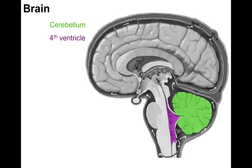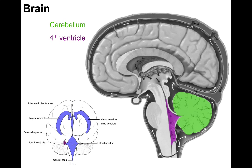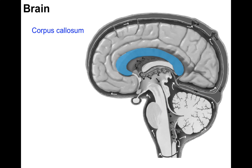The cerebellum in green has the fourth ventricle in purple in front of it, communicating above with the cerebral aqueduct and opening into the subarachnoid space through apertures. The fourth ventricle forms a large rhombus-shaped rhomboid fossa. The corpus callosum is a commissure connecting the right and left sides of the brain, and it also forms part of the roof of the lateral ventricles.